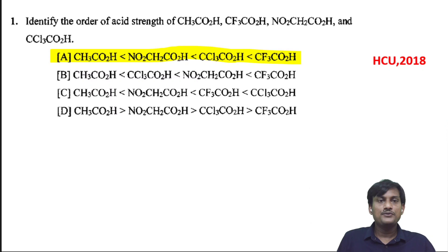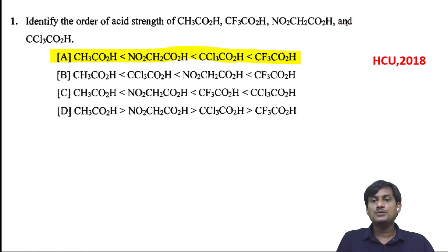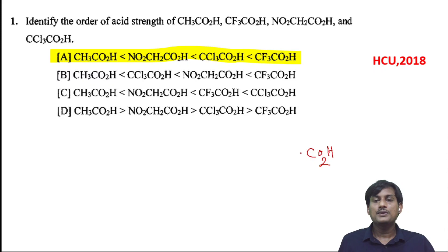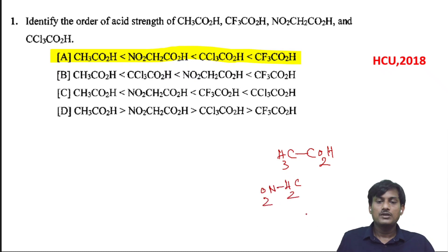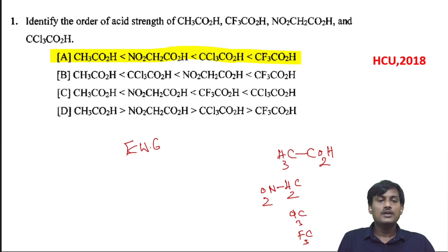Identify the order of strength of CH2CO2H, CF3CO2H, NO2CH2CO2H, and CCl3CO2H. Let us take the CO2H group. The groups attached with CO2H are CH3, CH2NO2, CCl3, and CF3. We know that as the electron withdrawing group increases, acidity increases.